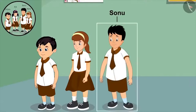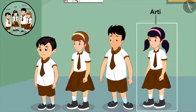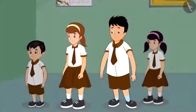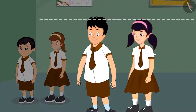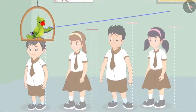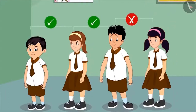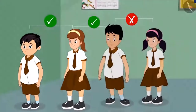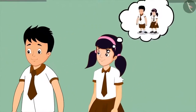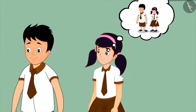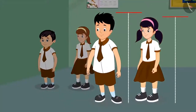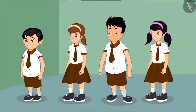Sonu stands behind Neha, and finally Aarti stands behind Sonu. But Sonu just notices that he is taller than Neha, but fails to notice that Aarti is shorter than him. So children, are Chotu and his friends standing in the correct order of height? Chotu and Neha are standing in the right order, but Sonu and Aarti are not. Aarti realizes this as she is not able to see anything by standing behind Sonu. Therefore, Aarti should have stood in front of Sonu as she is shorter than him.